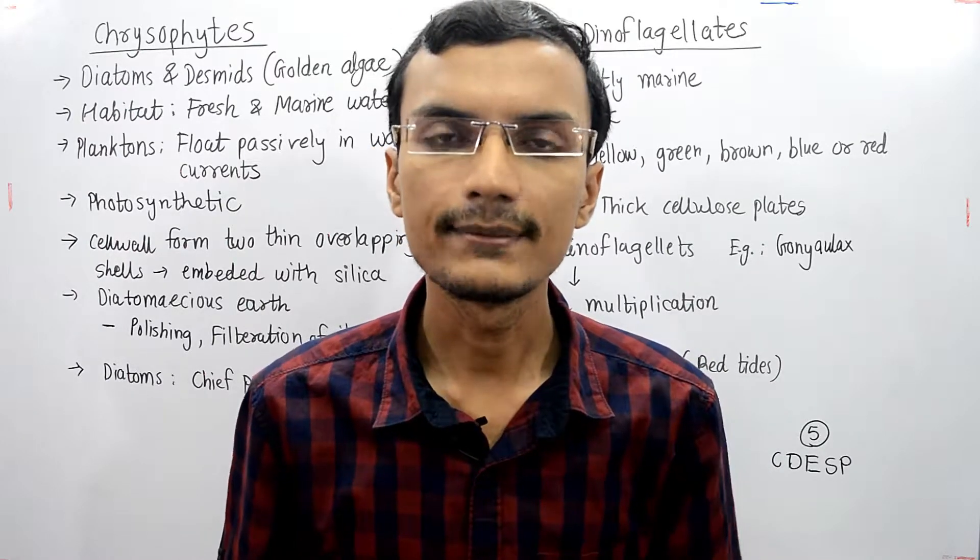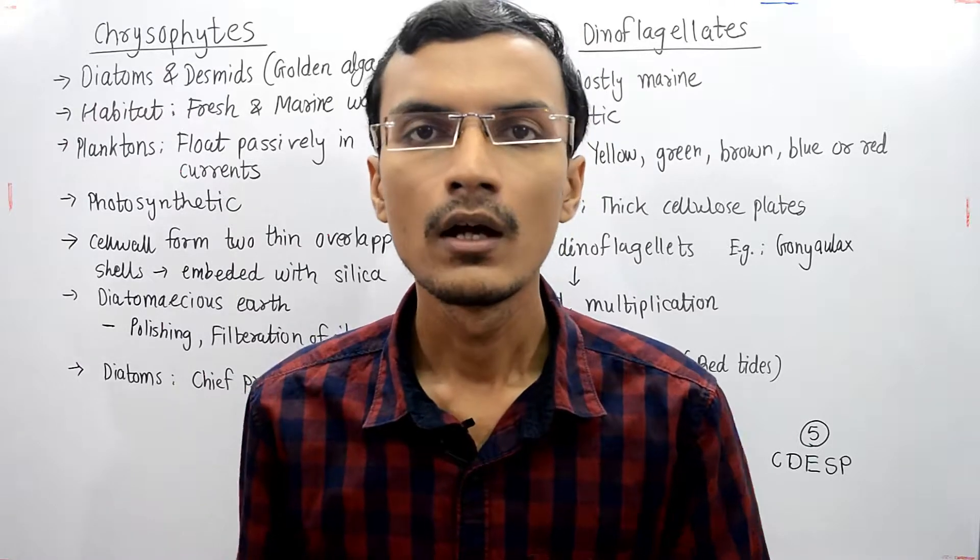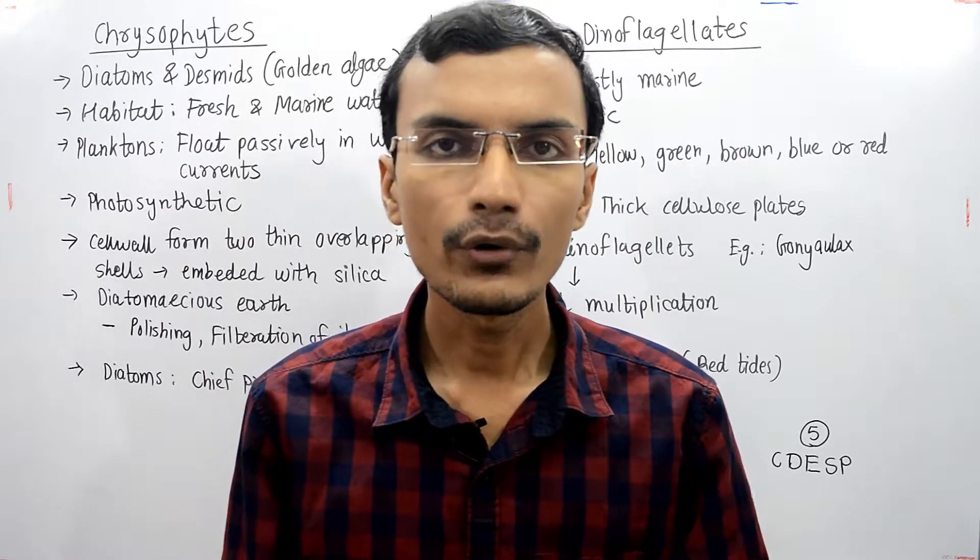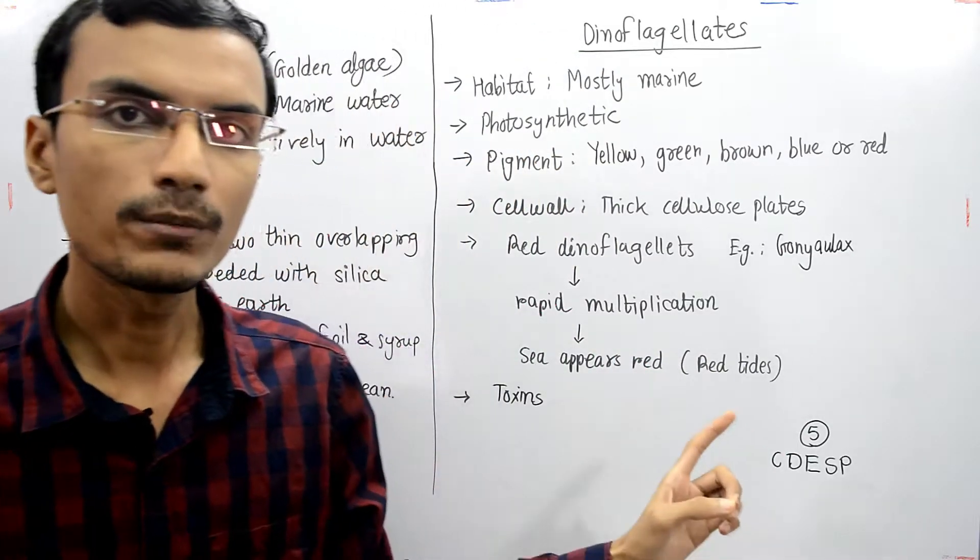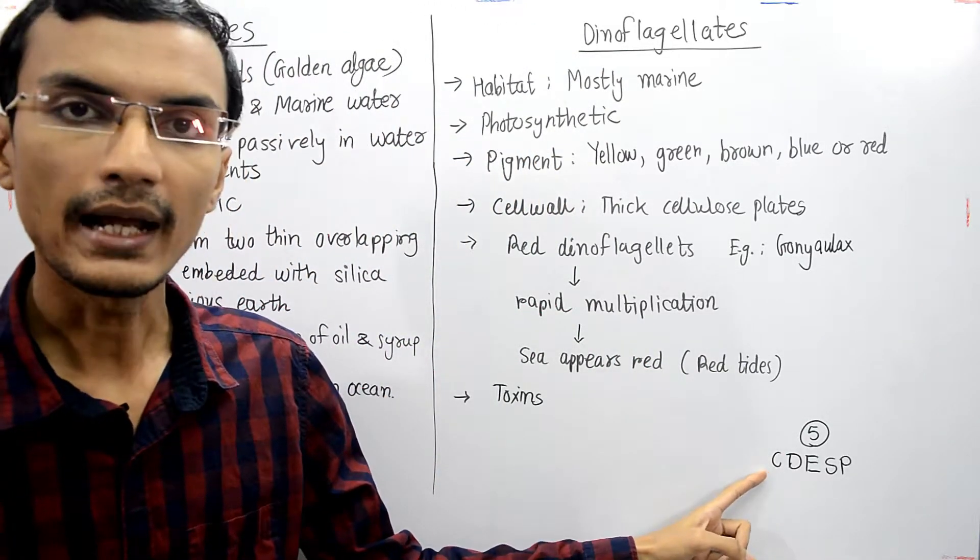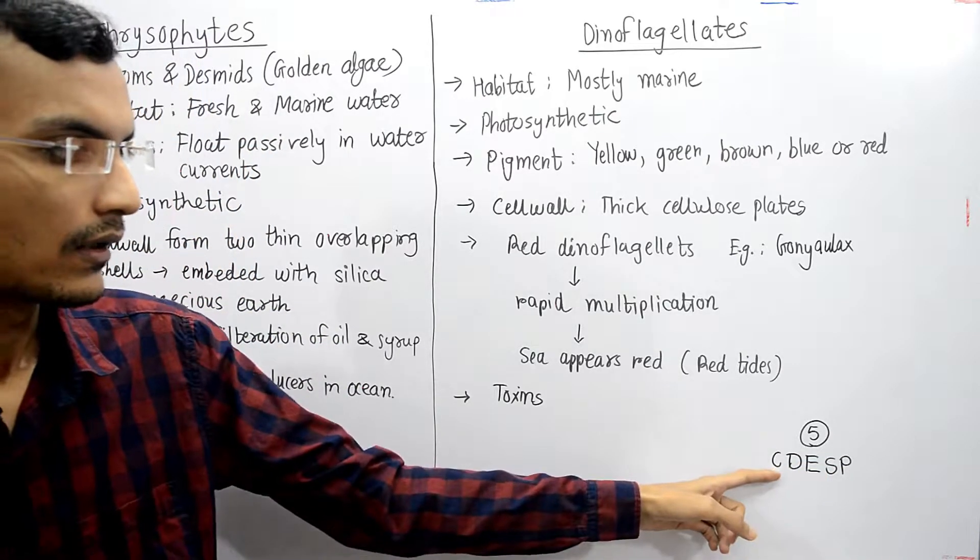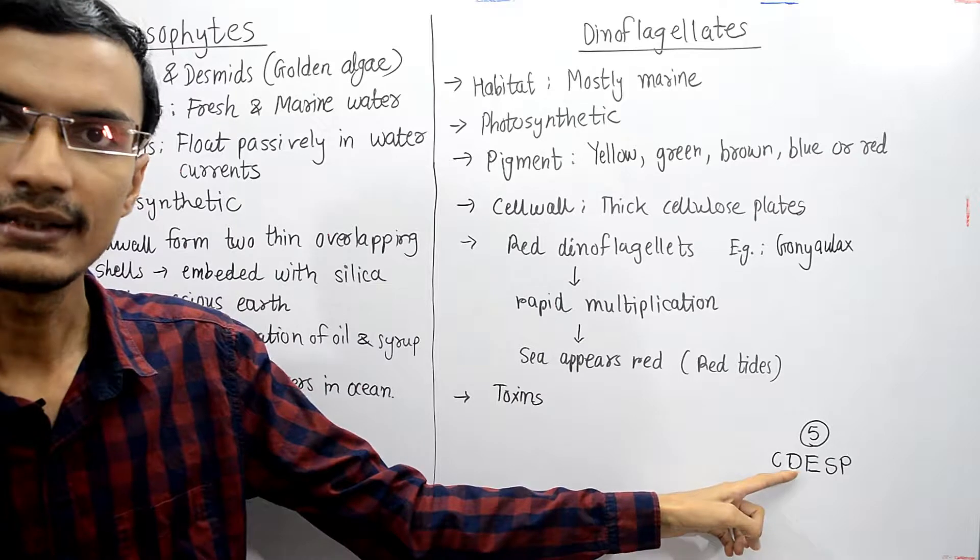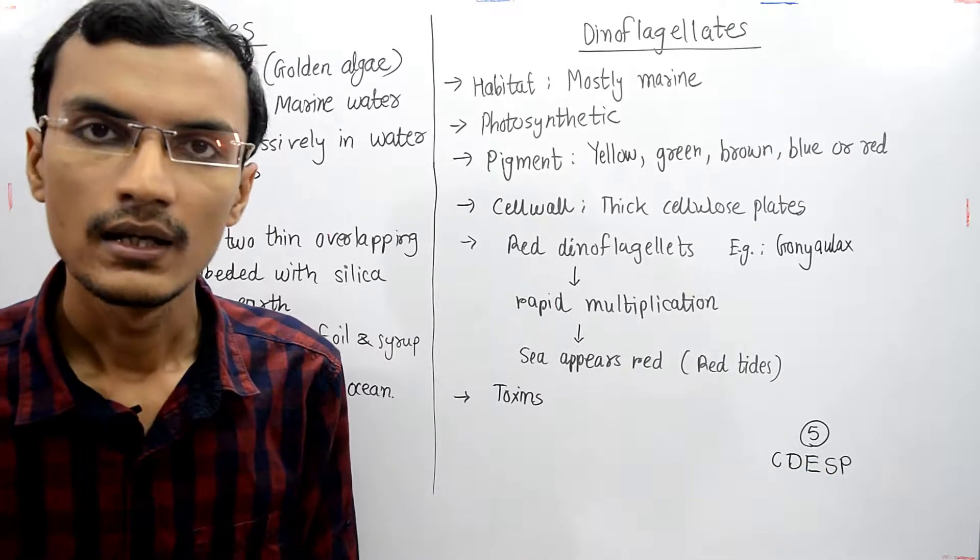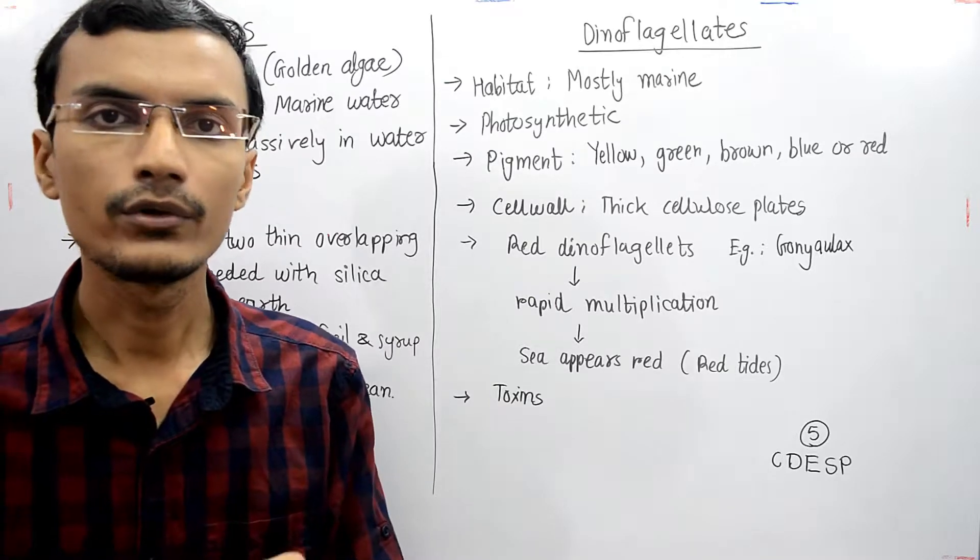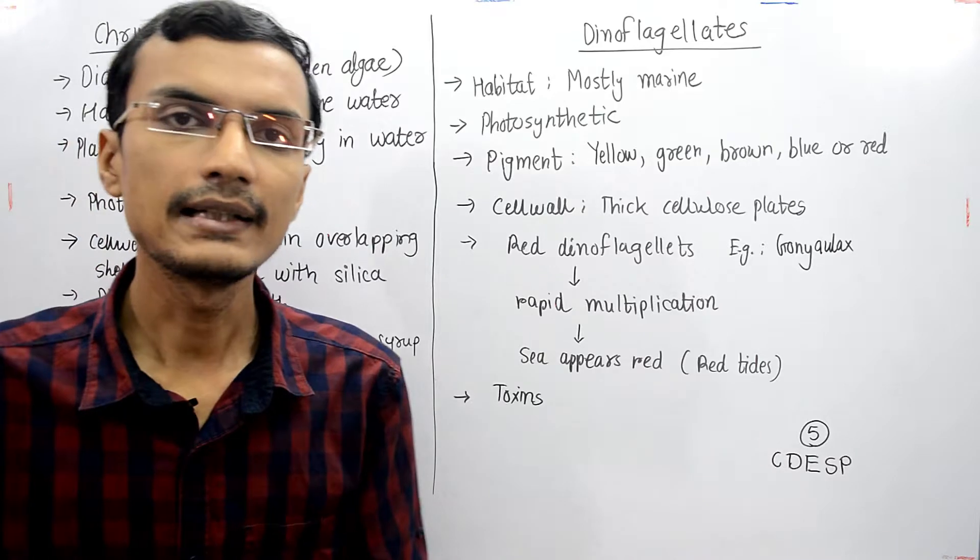Hello friends, welcome to Sandeep's Biology. In the previous video, I talked about Kingdom Protista, which includes five groups. You can remember them as CDESP: Chrysophytes, Dinoflagellates, Euglenoids, Slime molds, and Protozoans. In this video, I'll be talking about two groups: Chrysophytes and Dinoflagellates.